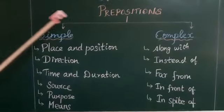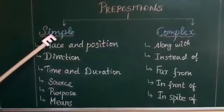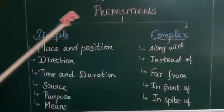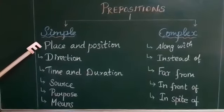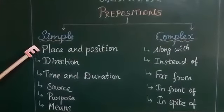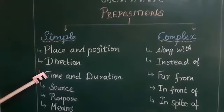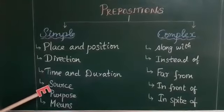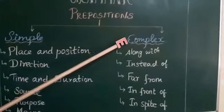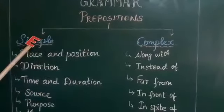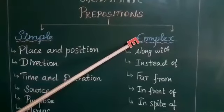Let's get into the types of prepositions: simple prepositions and complex prepositions. Simple prepositions include several types: place and position, direction, time and duration, and source, purpose, and means. Complex prepositions are more or less similar to simple prepositions, but they are made up of two or three words.